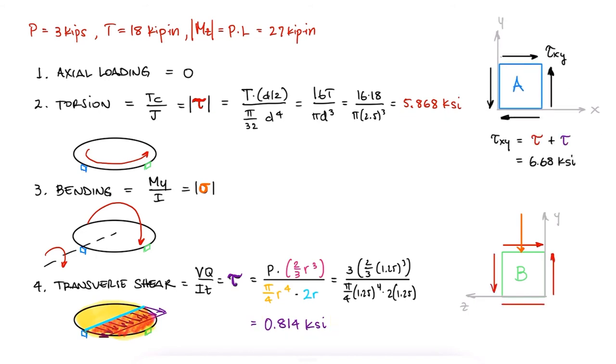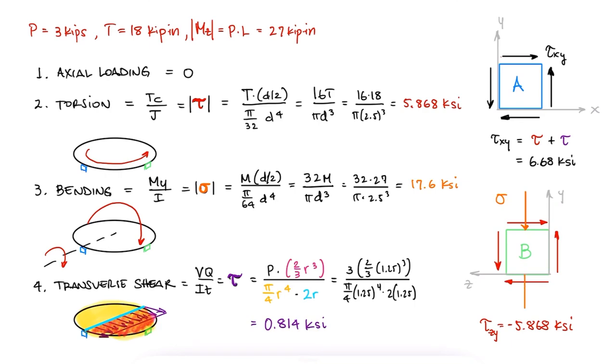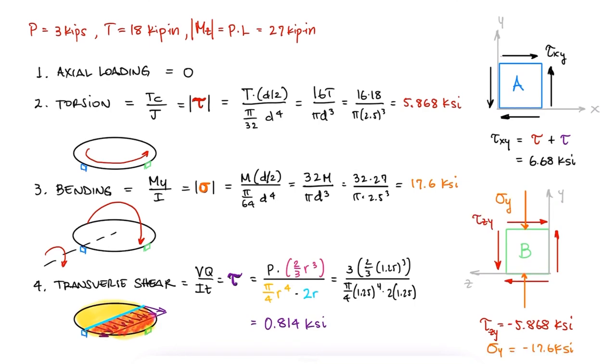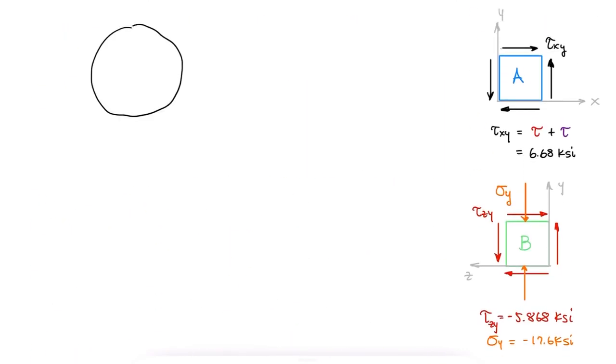The shearing stress for element B would only be that of torsion, and the normal stress would be that of bending, as a compressive normal stress in the y direction. By using Mohr's circle, we see that the principal stresses at location A are 6.68, 0, and minus 6.68.